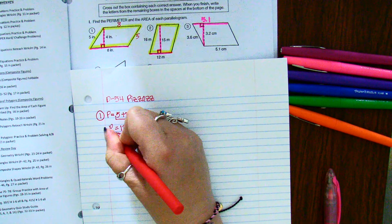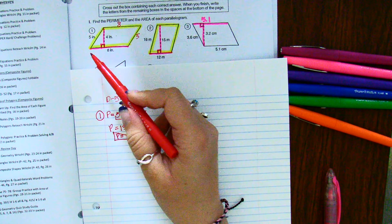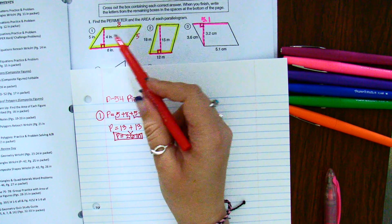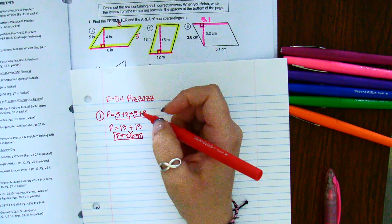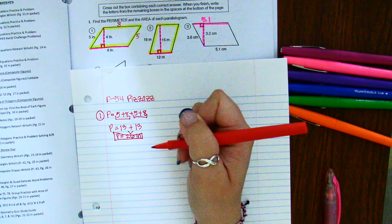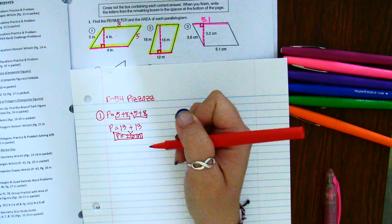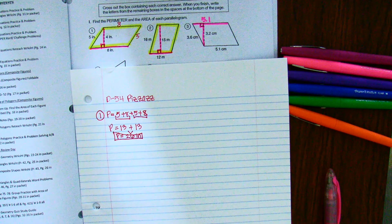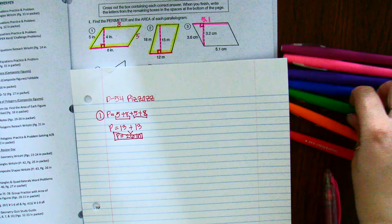Now, some of you guys noticed that it's two times the length plus two times the width when you're dealing with the parallelogram. That's fine. You could have done it that way too. As long as you ended with 26 inches for the perimeter, we're happy.